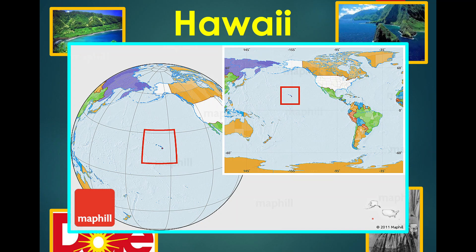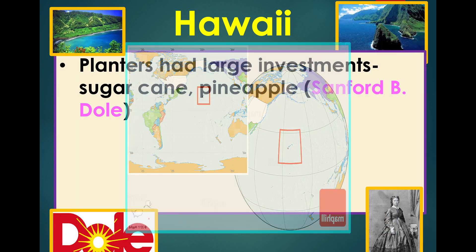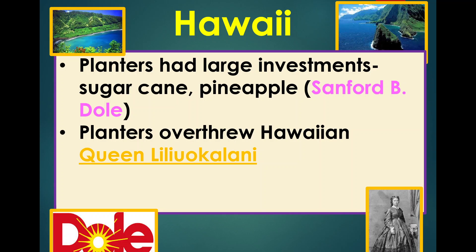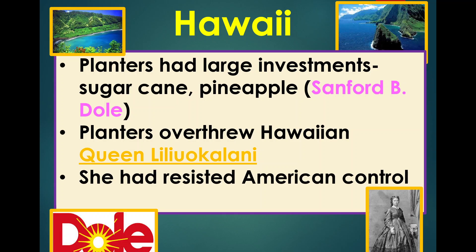Hawaii was a country in the middle of the Pacific. Prior to the American military overthrow, Hawaii had large investments of sugarcane and pineapple. Sanford B. Dole uses a paramilitary force to overthrow Queen Liliuokalani. The United States overthrows the Hawaiian queen, kicks her out of office, and takes control of Hawaii — turning it into a protectorate and eventually a naval port. It won't be until the late 1950s when Hawaii becomes a state in the United States.